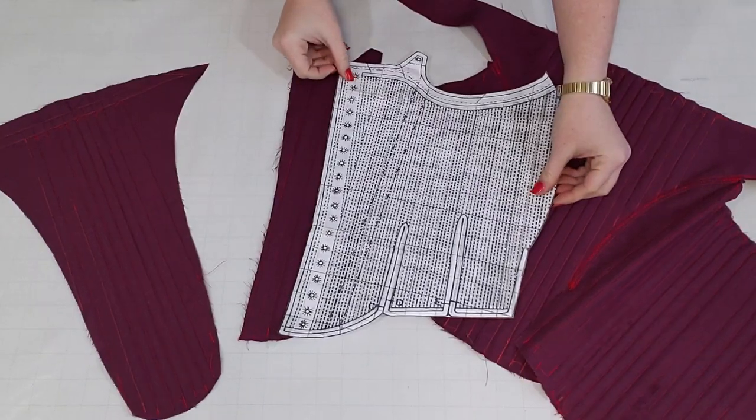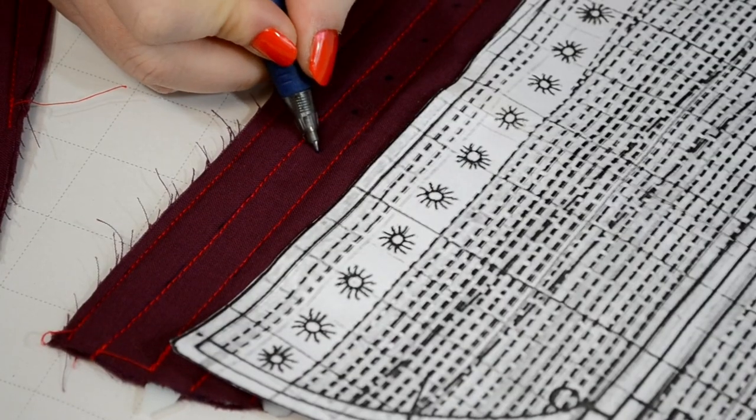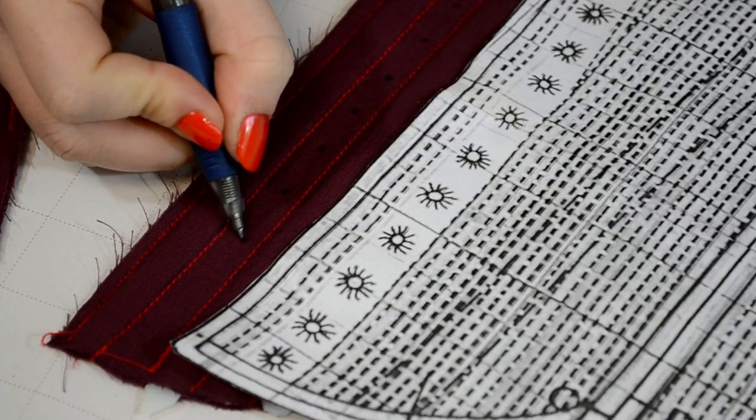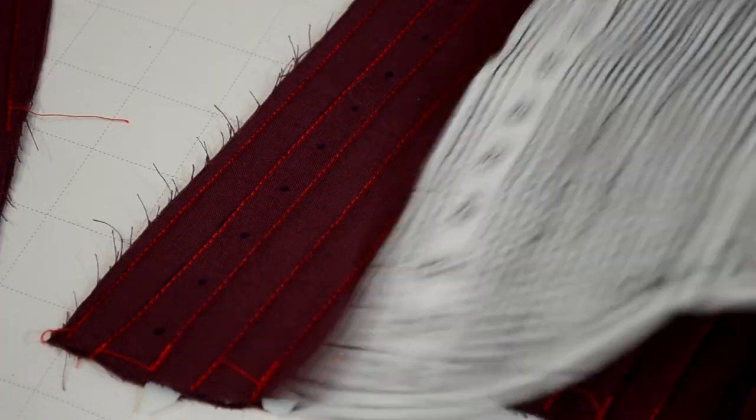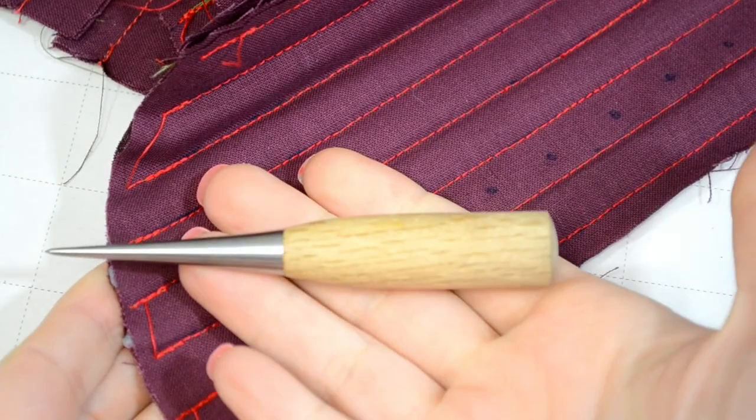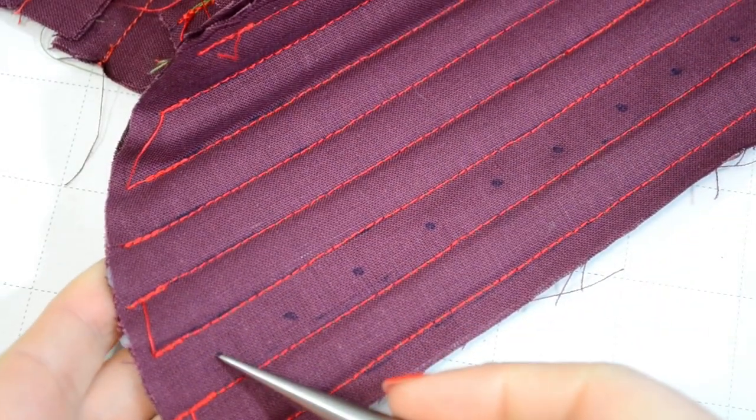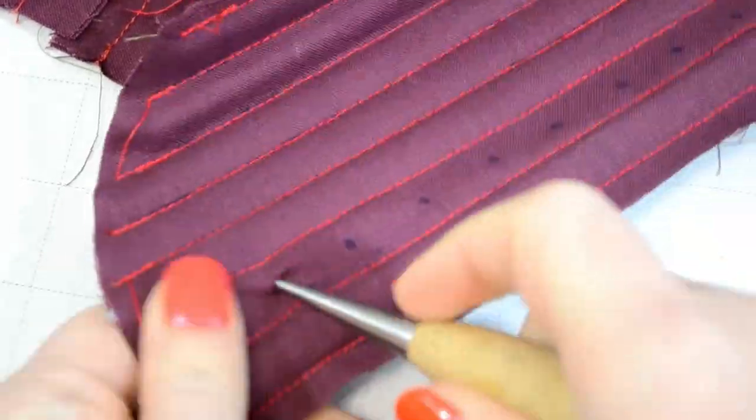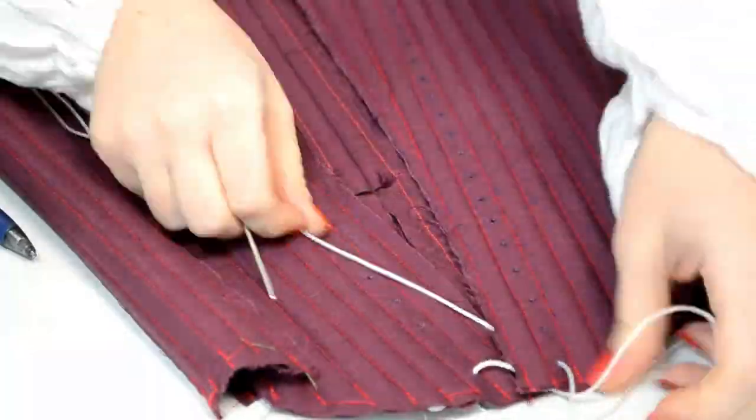The eyelets don't need to be sewn since this is just a mock-up, but I do need to mark out the placement to get a similar level of lacing support as the original. Using a small awl, I've opened up the eyelet holes and started getting the lacing in place.